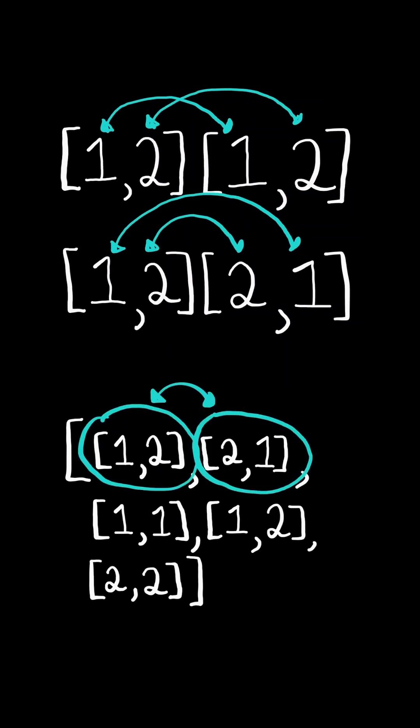For example, here is one pair of equivalent dominoes, and this is another pair of equivalent dominoes, and here is the last pair of equivalent dominoes. So in total, there are three equivalent pairs.